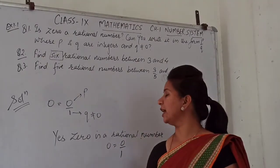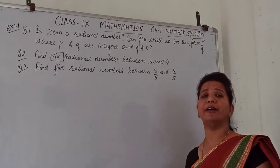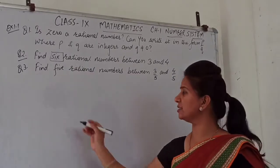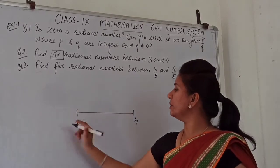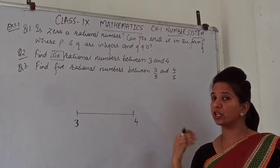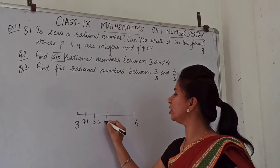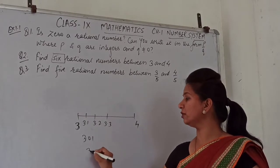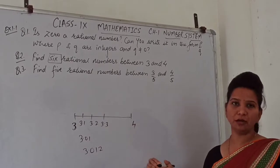I told you last time that if we have to give an oral answer or a one-mark question, we can write the answer in decimal format. Between 3 and 4, we can simply follow a pattern like 3.1, 3.2, 3.3 — all these are rational numbers between 3 and 4.